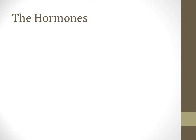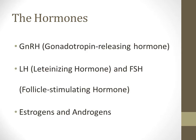Before we go into the HPG axis, we first have to talk about the subsets inside it — those subsets being the hormones involved: GnRH, LH, FSH, estrogens, and androgens.